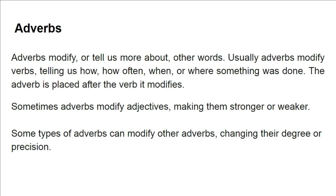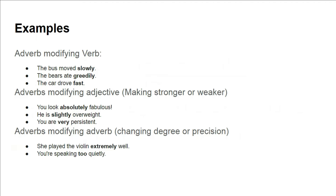Now let's look at some examples. First, when an adverb is modifying a verb: 'The bus moved slowly.' Slowly is an adverb of manner — it tells us how the bus moved. 'The bears ate greedily.' Greedily is linked with the verb 'ate' and describes the manner in which the eating was done.